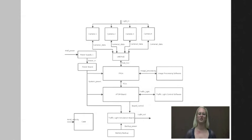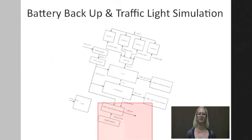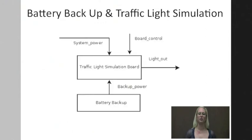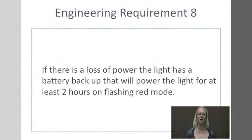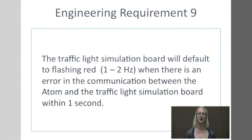Since the traffic light system is intended for real-world use, there is always a chance of something going wrong. The battery backup system is designed to minimize problems when they arise. A problem can be categorized by a lack of communication between the atom processor and the simulation board, or erroneous data sent from the atom. By another engineering requirement, if communication is cut between the atom processor and the traffic light simulation board, the battery backup is used to power the traffic lights in a way that safely directs traffic and is familiar to drivers. In this case, lights in all directions will flash red, as is the current protocol for power outages.